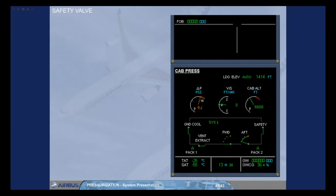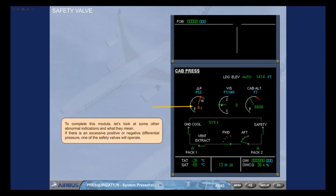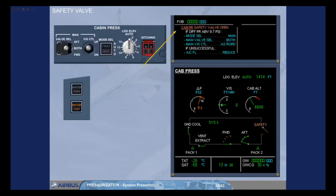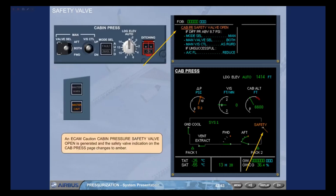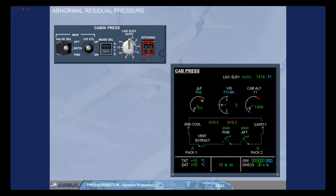Let's look at some other abnormal indications and what they mean. If there is an excessive positive or negative differential pressure, one of the safety valves will operate. An ECAM caution CABIN PRESSURE SAFETY VALVE OPEN is generated and the safety valve indication on the cabin pressurization page changes to amber. If on the ground and in case of abnormal residual pressure, when speed is below 100 knots, or after all engines are shut down, with manual mode selected or with both CPCs failed, the Residual Pressure Control Unit (RPCU) automatically controls the outflow valves to open.